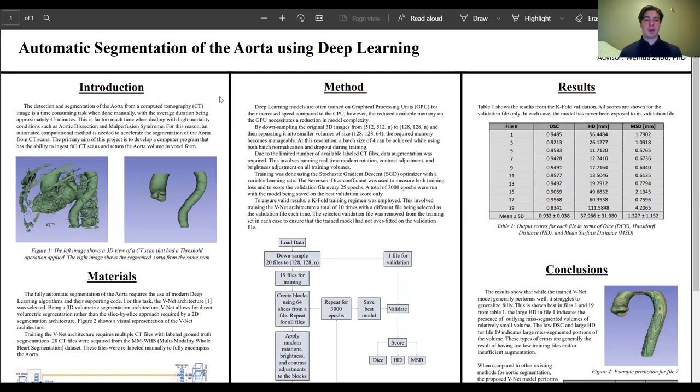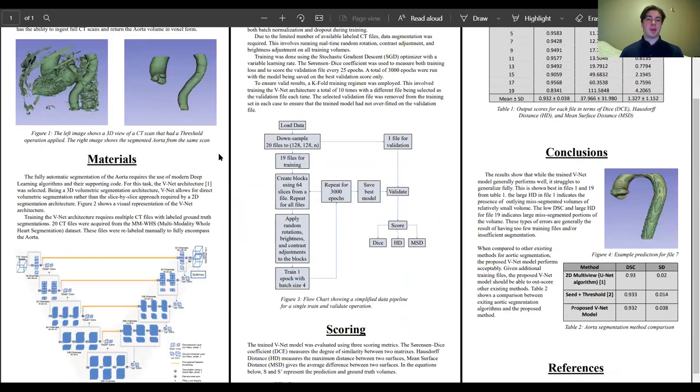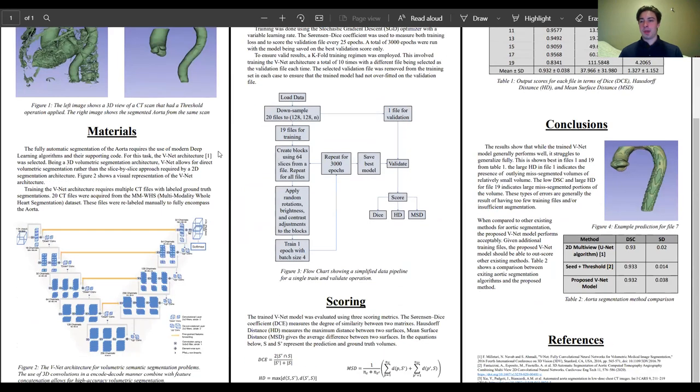Some quick background. Locating the aorta from a computed tomography scan often takes about 45 minutes to an hour when done manually. That's just from personal experience but it can take longer as well. For that reason we're looking at ways to accelerate the process using automation.